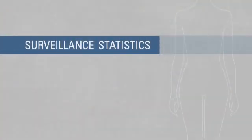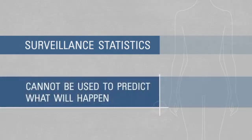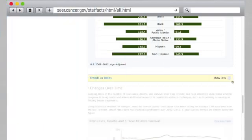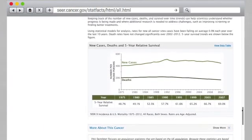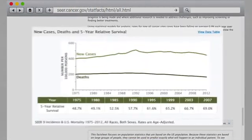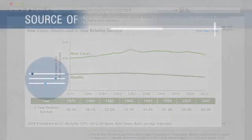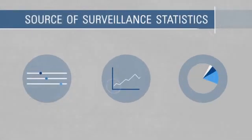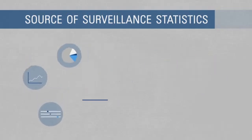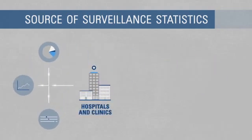Because surveillance statistics are based on large groups of people, they cannot be used to predict exactly what will happen in an individual patient. However, gathering these data over time can show trends in new cases, deaths, and survival, indicating where more research is needed.